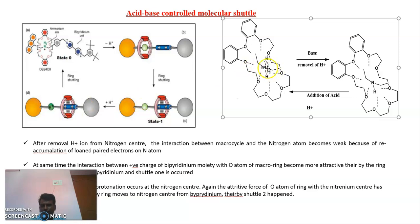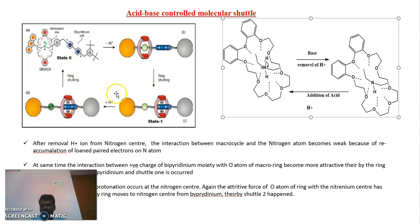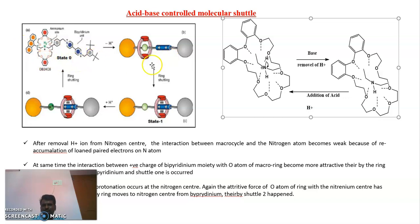That attractive force between this oxygen and this nitrogen has been retained, so that ring starts to move from bipyridinium back to the original ammonium side position. So by this protonation and deprotonation, we can move this ring between the two bulky molecules. We can make this as a molecular machine for particular biological functions.